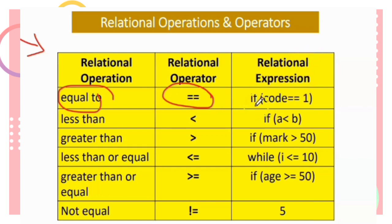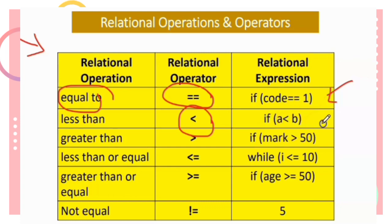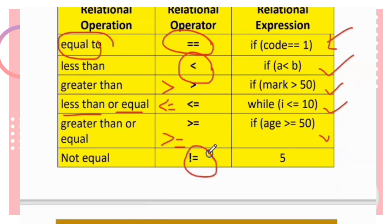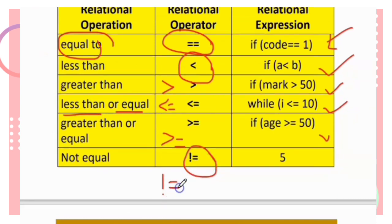For the equal-to relational operator, you must use double equals (==). For example: if (i == 20). Less than uses <, e.g., if (a < p). Less than or equal uses <=, e.g., yi <= n. Greater than uses >. Greater than or equal uses >=, e.g., h >= 50. Not equal uses the != operator.